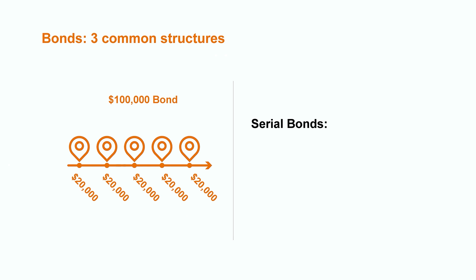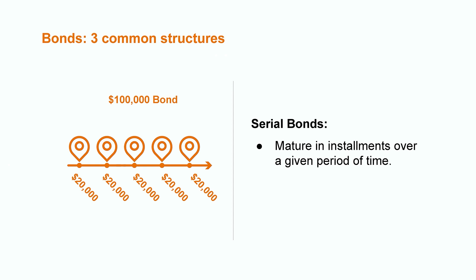Now, serial bonds are a little bit different. Instead of coming due at a date in the future, they mature in installments over a period of time. For example, a $100,000 five-year serial bond might come due in $20,000 increments each year over those five years. This means that the owners of these bonds would slowly be cashing them in or redeeming them as time goes by. Now, it's up to the company to decide how they want to structure their bonds. However, the ultimate goal is to drive investment into the company, so they need to ensure that the bonds are attractive to investors.